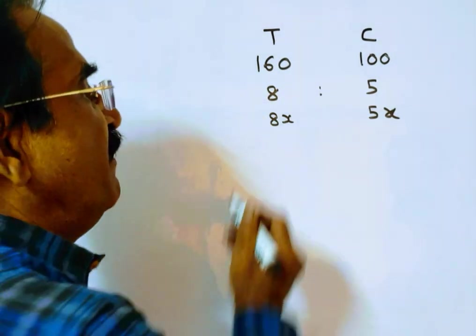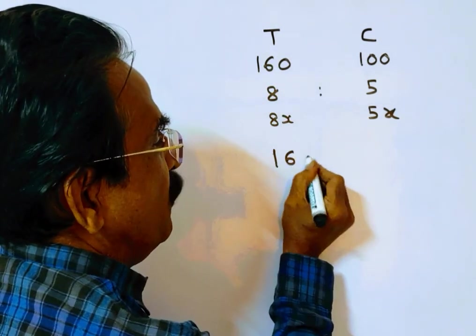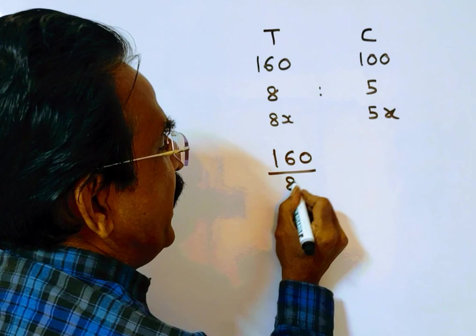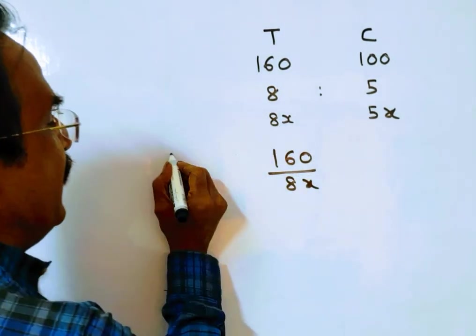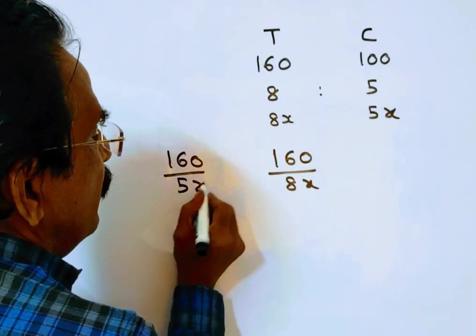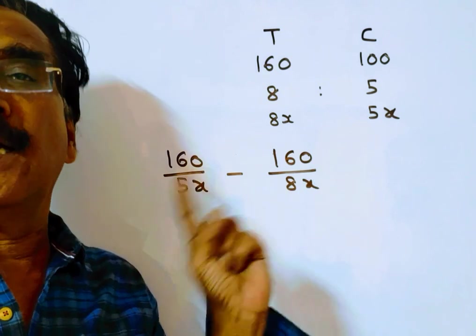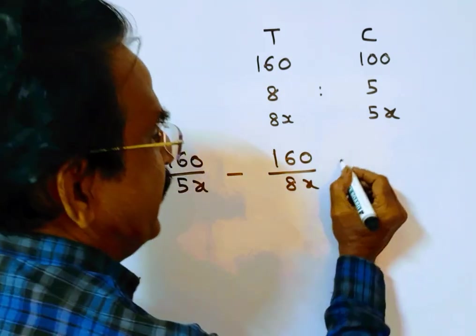The time taken by the train: 160 kilometers is the distance, time taken by the train, and time taken by the car. The difference between the times taken by the train and car is 20 minutes. 20 minutes is 1/3 hour.